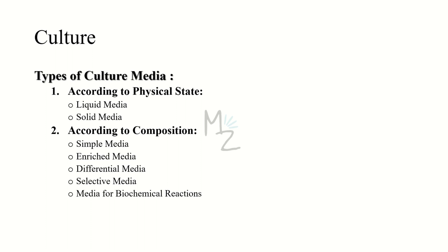Culture media can also be classified by physical state and composition. According to physical state, media are classified as liquid or solid. Liquid media are fluid in nature, usually placed in test tubes, and are also called broths — for example, nutrient broth, tryptic soy broth, and phenol red carbohydrate broth.